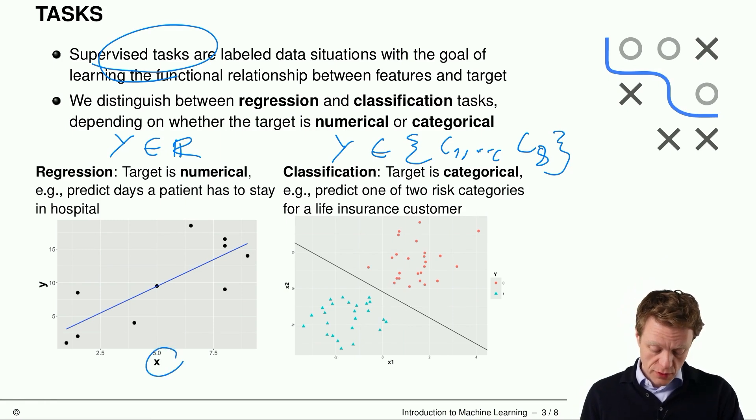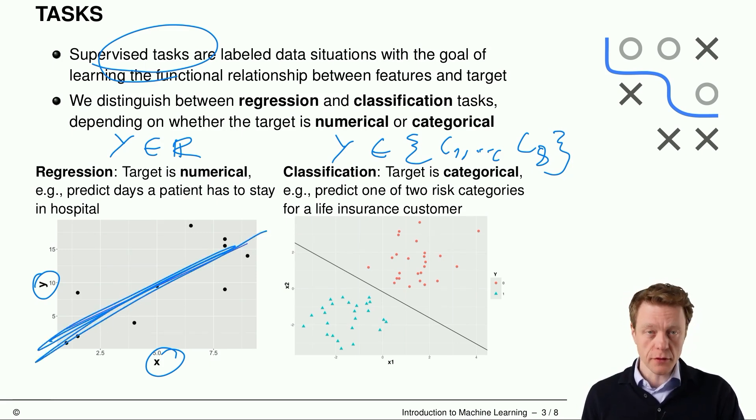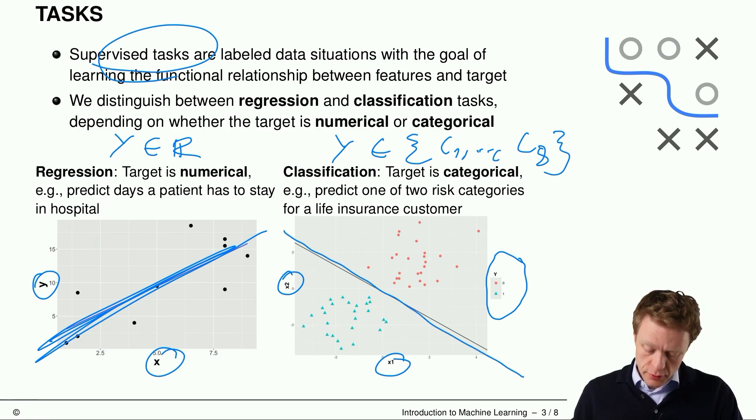So on the left hand side, we have one feature x and one target y. Both are numerical and the black dots are data points. And we want to learn this functional relationship here. And on the right hand side, the target y is denoted by the color and form of the dots here. So we have circles and triangles and we have two numerical features. And we want to learn the decision boundary between the two classes 0 and 1 in this case.